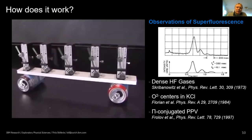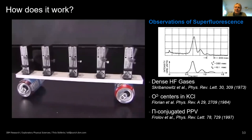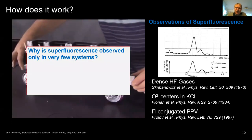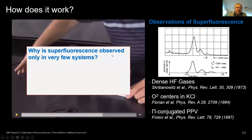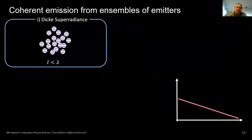Superfluorescence has been quite rare because it requires several stringent conditions. Examples include dense HF gases, F2 color centers in KCl, or certain conjugated polymers. The requirements are: high uniformity of emitters — minimal wavelength dispersion — very high oscillator strength to couple via the electromagnetic field, and a long exciton dephasing time to allow dipoles to synchronize their phases.